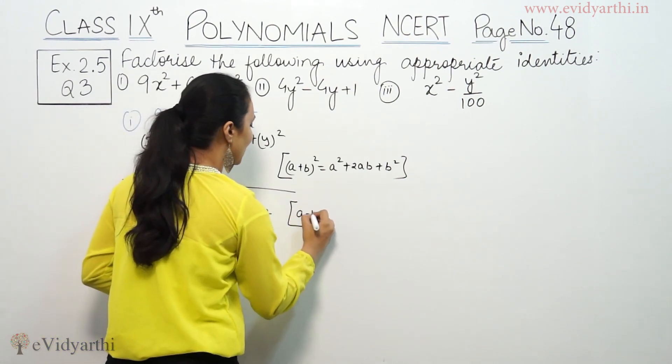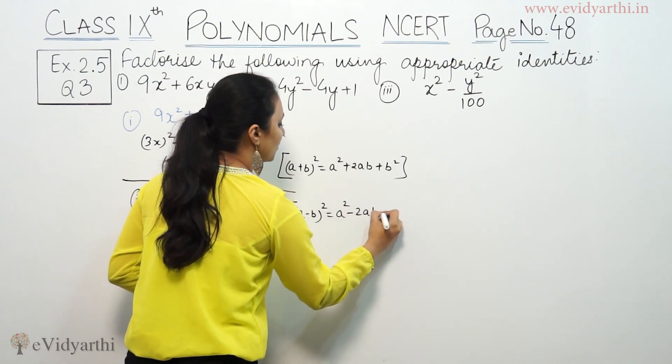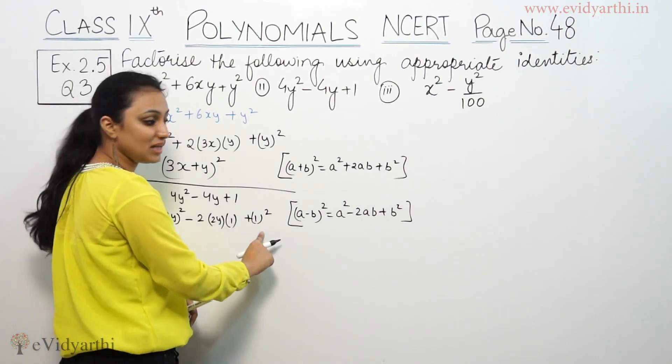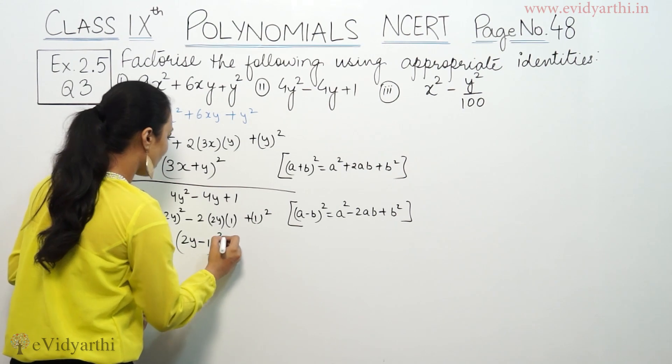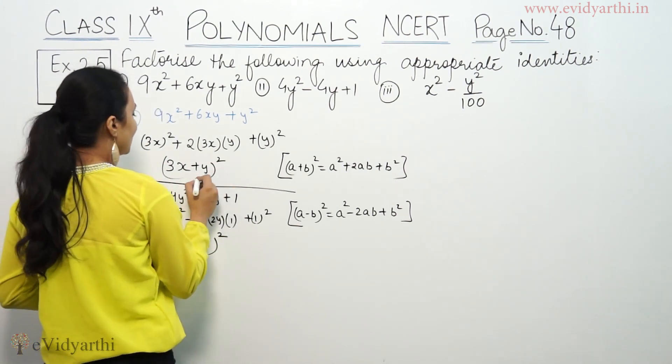Identity, we have our identity, a minus b whole square, a² minus 2ab plus b². That means, this is 2y minus 1 whole square. So, this is 2y minus 1 whole square.